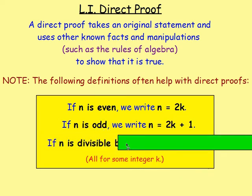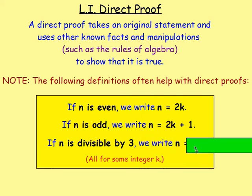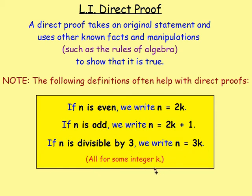A lot of the time you may have to prove that N is divisible by, for example, 3. If it's going to be divisible by 3, it's going to have to be something in the three times table. So you would say N equals 3K. If N was divisible by 4, you would write N equals 4K. If it was divisible by 7, you would say N equals 7K. All of these for some integer K.